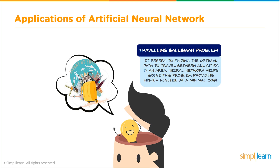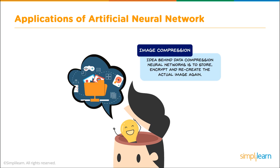The traveling salesman problem refers to finding the optimal path to travel between all cities in an area. A neural network helps solve this problem, providing higher revenue at minimal cost — logistics are used by companies like Amazon, which pre-ships packages to fill empty truck space based on predicted purchases, saving time and delighting customers. Image compression: the idea behind neural network-based data compression is to store, encrypt, and recreate the actual image, optimizing compression and saving storage space.